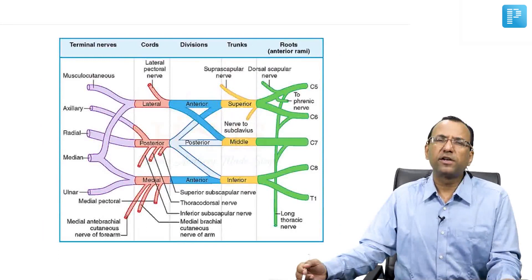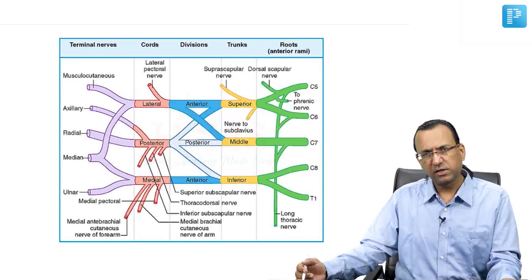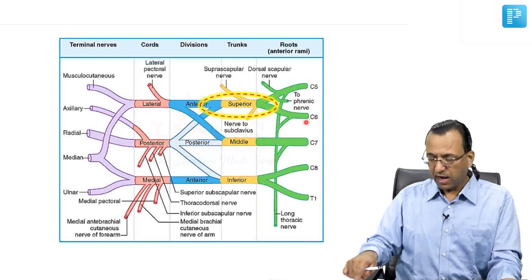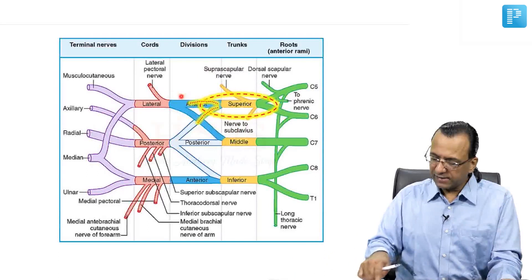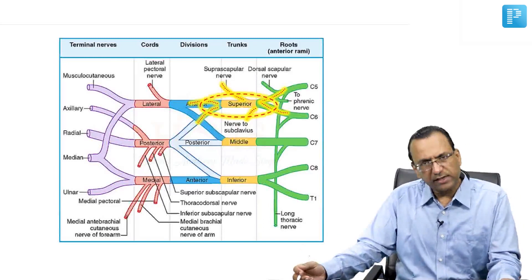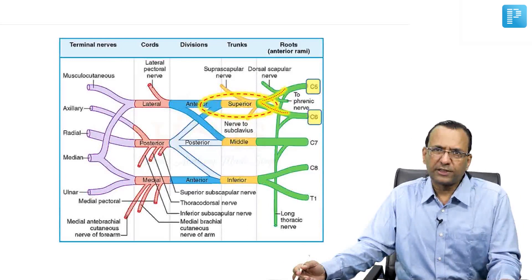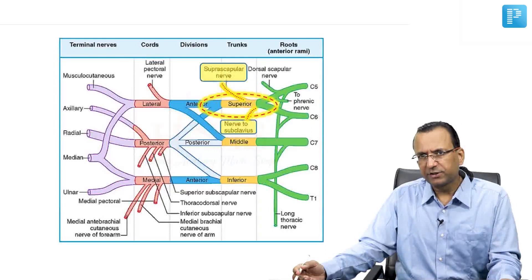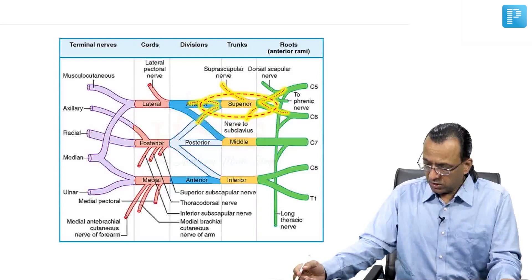So what is Erb's Point then? Erb's Point is in the territory of the upper trunk and is a six nerves meeting point. Which six nerves are meeting here? It is the root of C5 and root of C6, the suprascapular nerve and nerve to subclavius, and the anterior division and posterior division of upper trunk. So the six nerves at Erb's Point are: root of C5, C6, the suprascapular nerve, nerve to subclavius, anterior division and posterior division of upper trunk. That is Erb's Point.